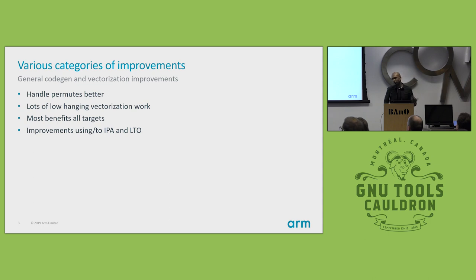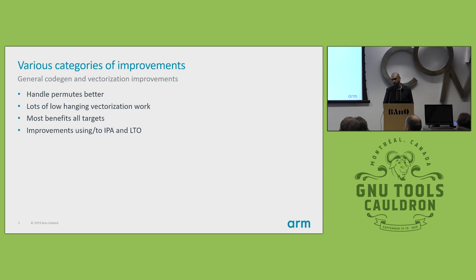There are various categories of improvements we're going after. Some are quite general — for instance, we need to handle permutes better in GCC, because not all targets have a plethora of instructions to handle complicated permutes, so the compiler just needs to generate better code for these. There's a lot of low-hanging factorization work where GCC just doesn't factorize code that it can, and most of these will benefit all targets. On top of this, we have a lot of improvements relating to LTO and IPA.